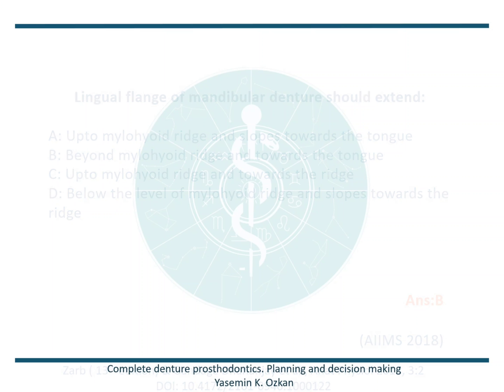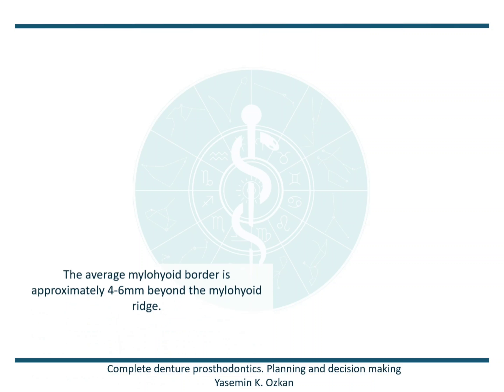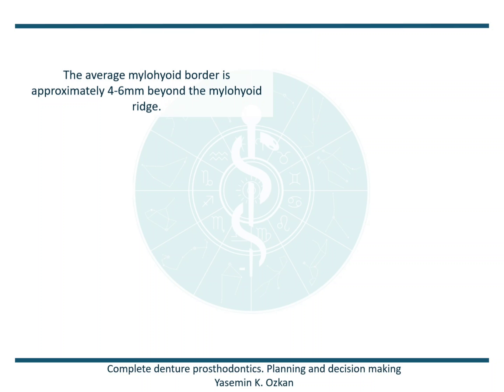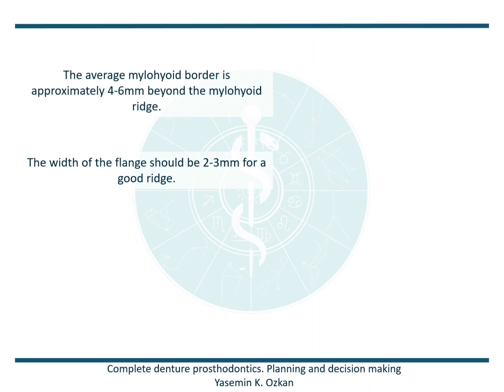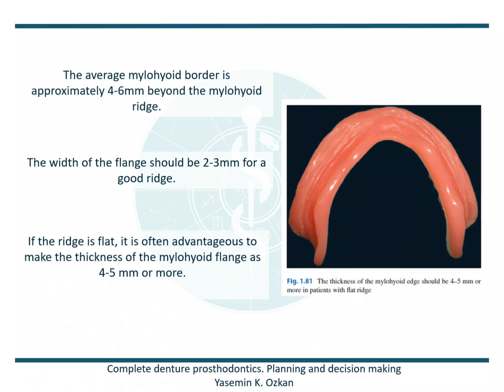The average mylohyoid border is approximately 4 to 6 mm beyond the mylohyoid ridge. The width of the flange should be 2 to 3 mm for a good ridge. But if the ridge is flat, it is often advantageous to make the thickness of the mylohyoid flange 4 to 5 mm or more.